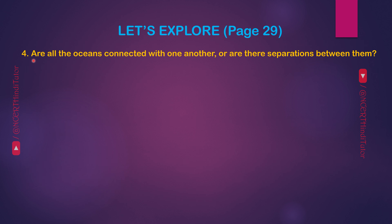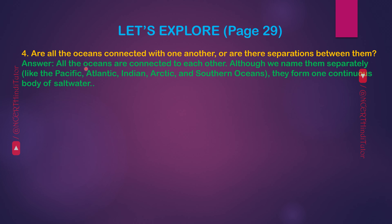Question 4: Are all the oceans connected with one another or are there separations between them? Answer: all the oceans are connected to each other. Although we name them separately — like the Pacific, Atlantic, Indian, Arctic, and Southern Oceans — they form one continuous body of salt water.